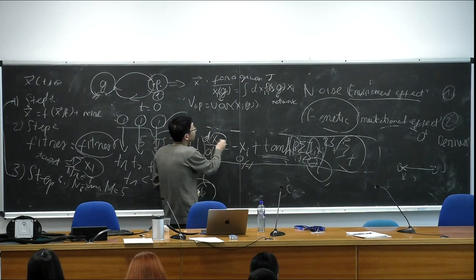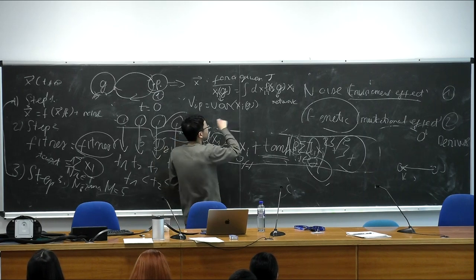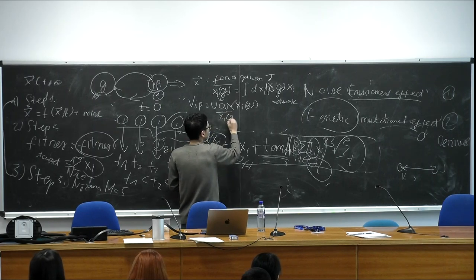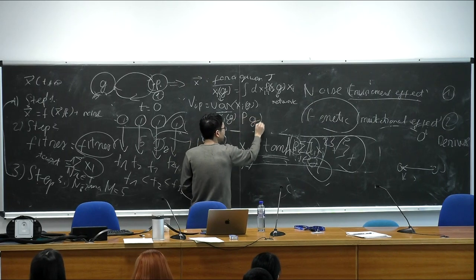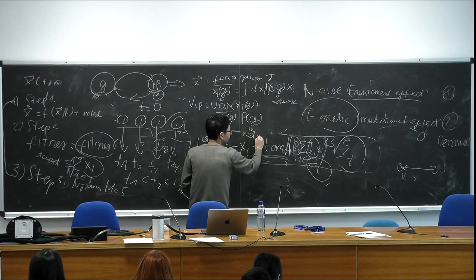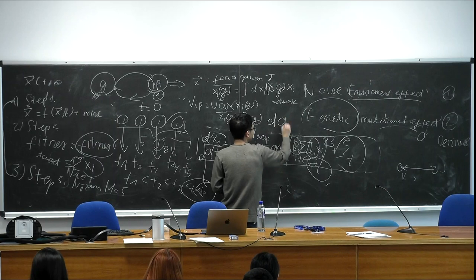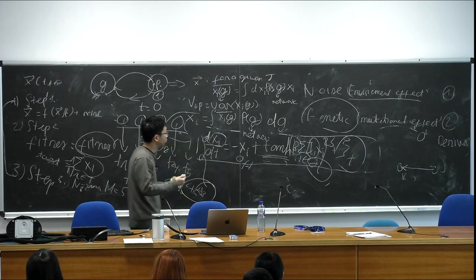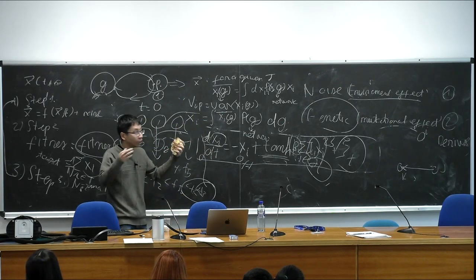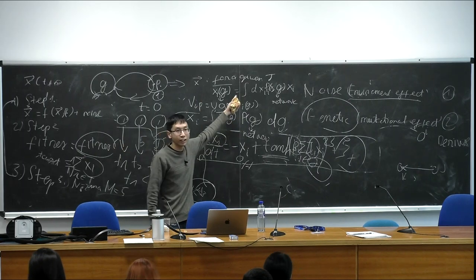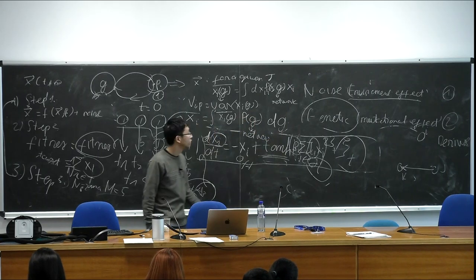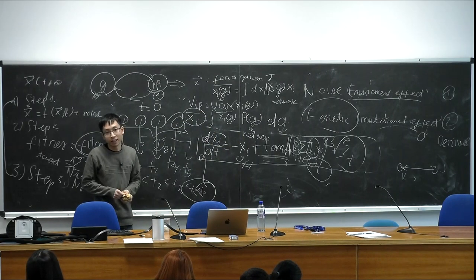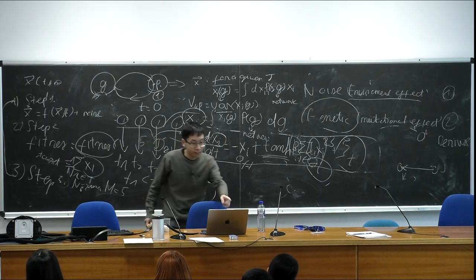The mutational variance V_G is defined as follows: for each network g, you compute the mean x_i(g). Then you consider the distribution of x_i(g) over the network ensemble and compute the variance. This gives V_G — the variance of the network-averaged gene state across different network instances. So you have two variances: V_IP (isogenic, from stochastic noise for a fixed network) and V_G (mutational, from variation across different networks).